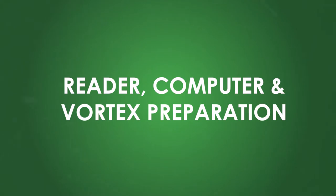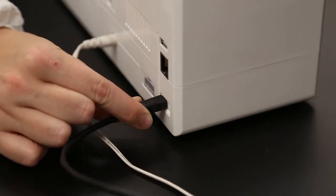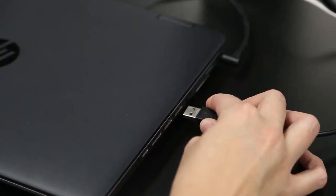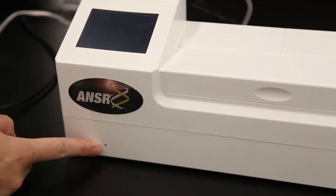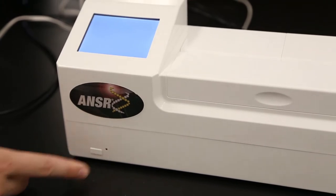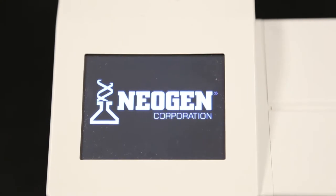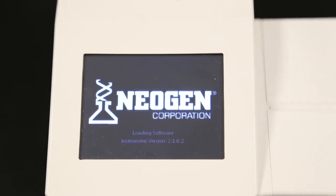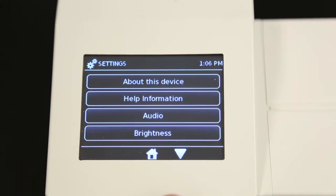Reader, computer, and vortex preparation. Make sure the answer reader and provided laptop are plugged in, and the connector between the reader and laptop is secure. Turn on the answer unit by holding the button on the front just for a moment. It takes the unit about a minute to load the software for use. The first time you use the reader, you need to select the third box on the touch display with the gears. Then, press the down arrow once at the bottom of the screen.